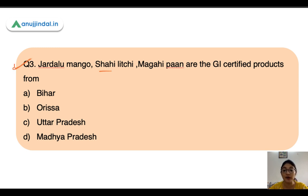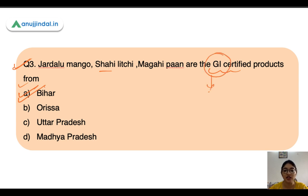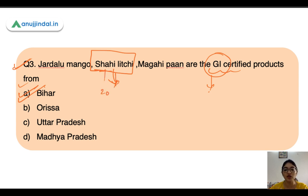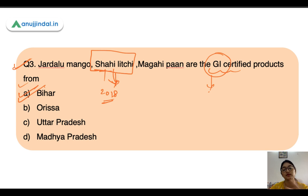The third question: Jarlalu mango, Shahi litchi, Maghai paan are GI-certified products from which state? The options are Bihar, Orissa, Uttar Pradesh, and Madhya Pradesh. The correct answer is Bihar. You should know GI products that are in the news — Shahi litchi was recently in news as the first export from Bihar. Shahi litchi received its GI tag in 2018, and all these products are GI-certified products from Bihar only.